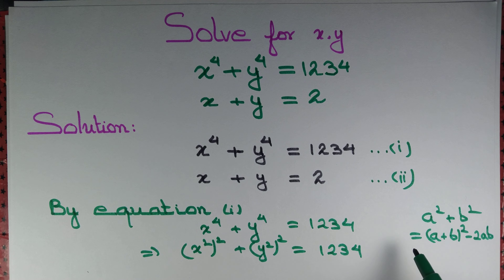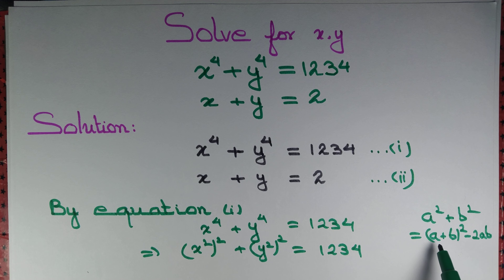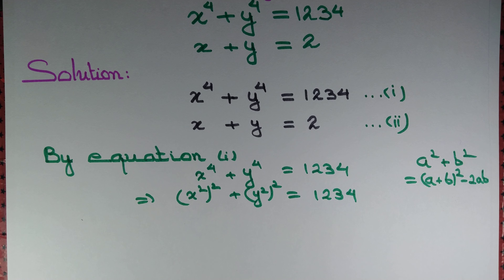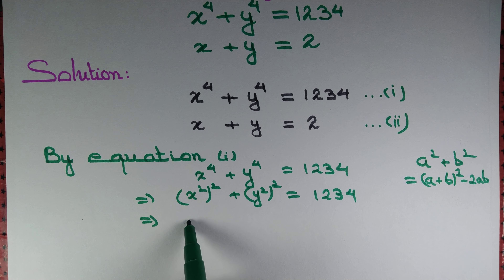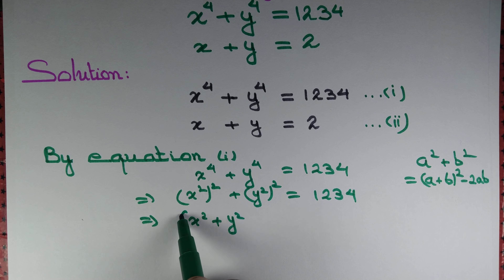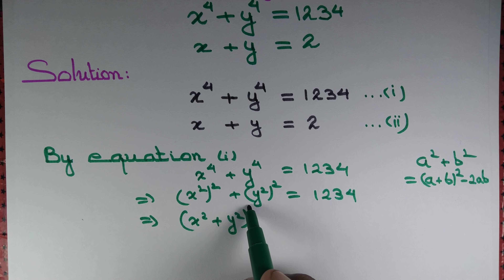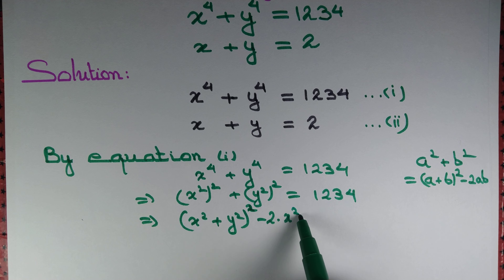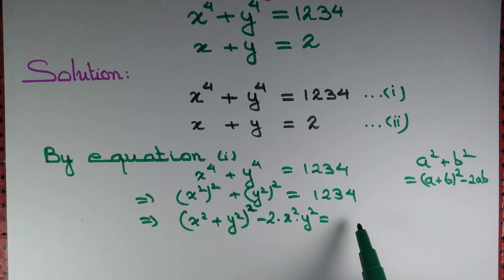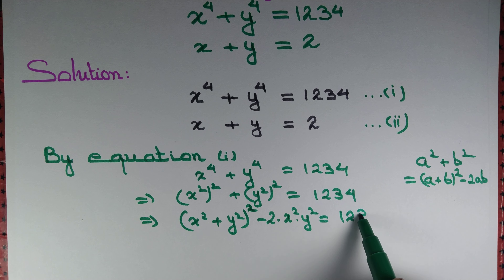Now we apply the formula a² + b² = (a+b)² - 2ab. So (x²)² + (y²)² = (x² + y²)² - 2·x²·y² = 1234.